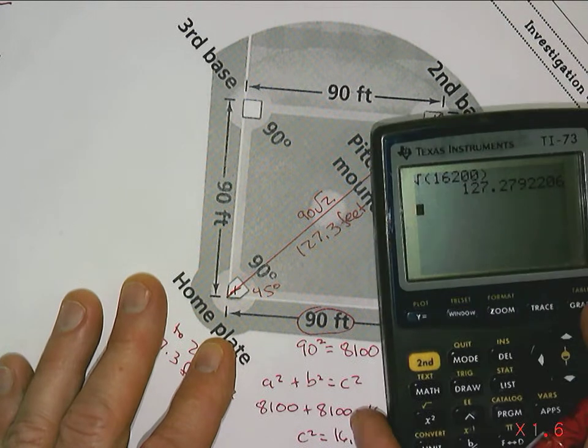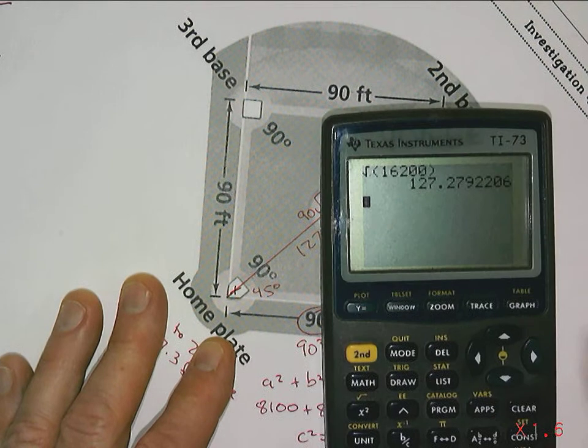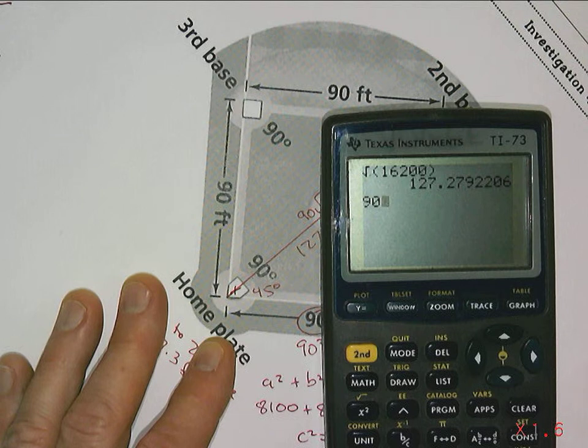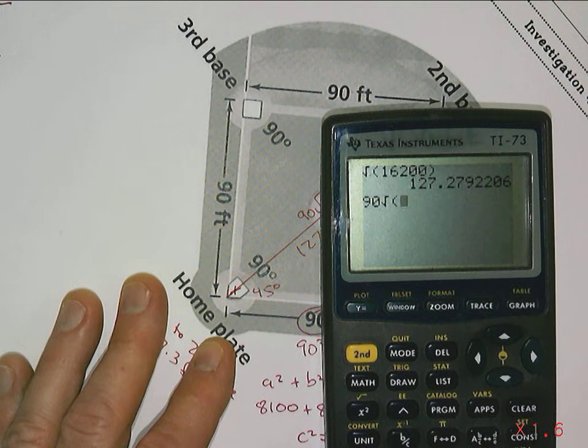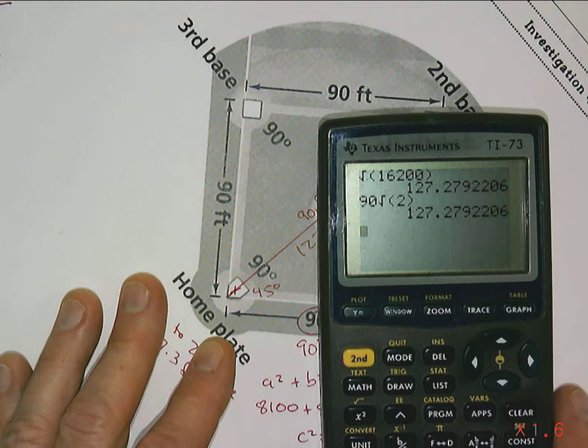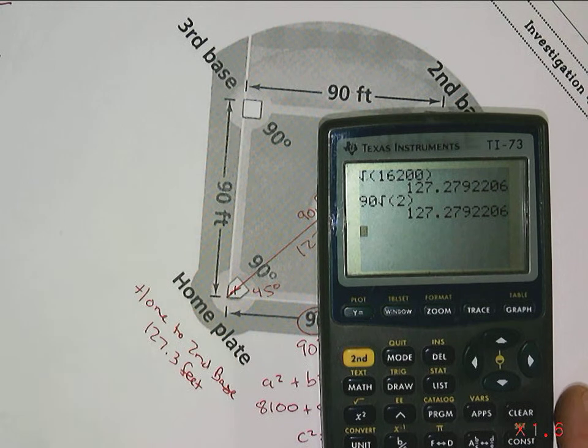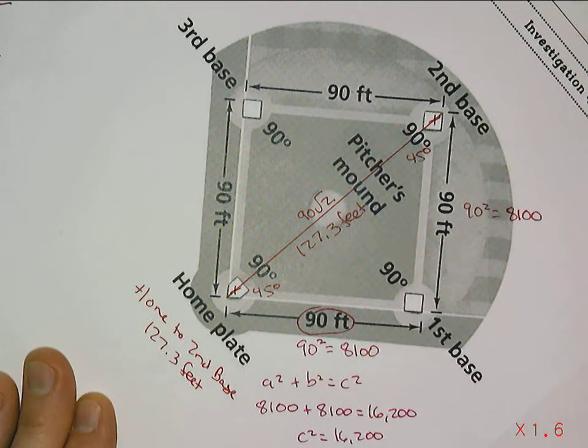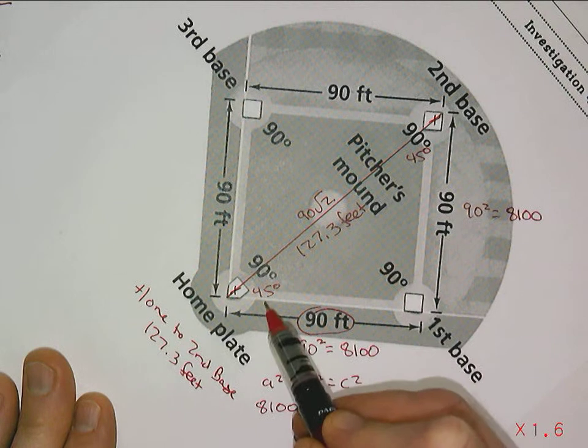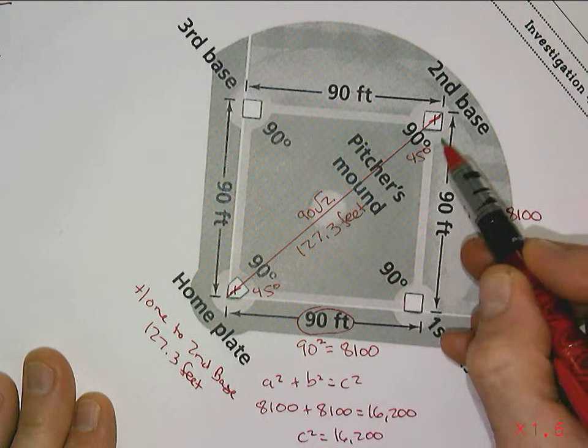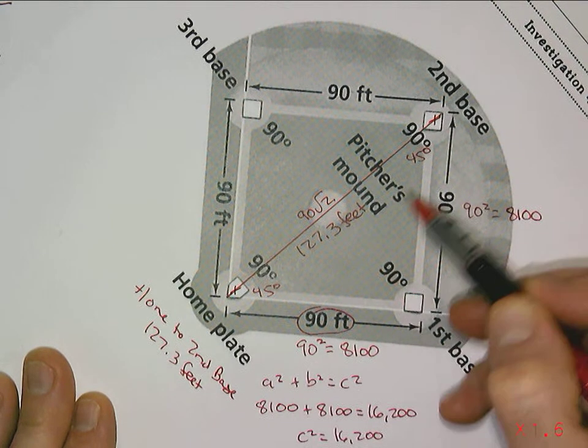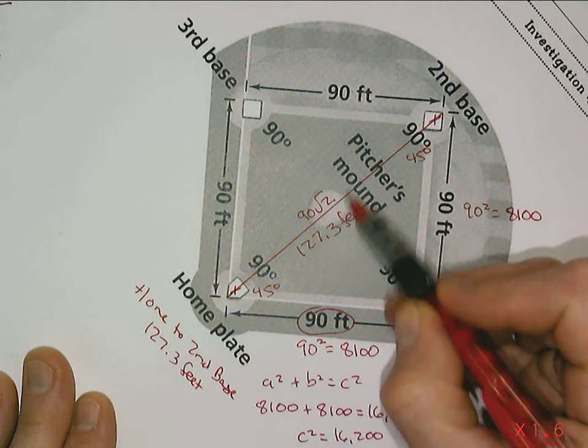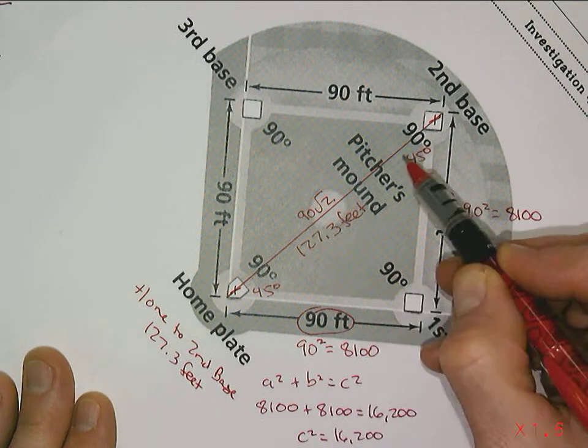I could have simply done my calculation by taking 90 times the square root of 2, and I actually get the same solution: 127.3 feet across. So it's another way, if a particular triangle has those features with a 45-degree angle here and a 45-degree angle here and a 90, which is really half a square, I can use that method for finding that distance across.